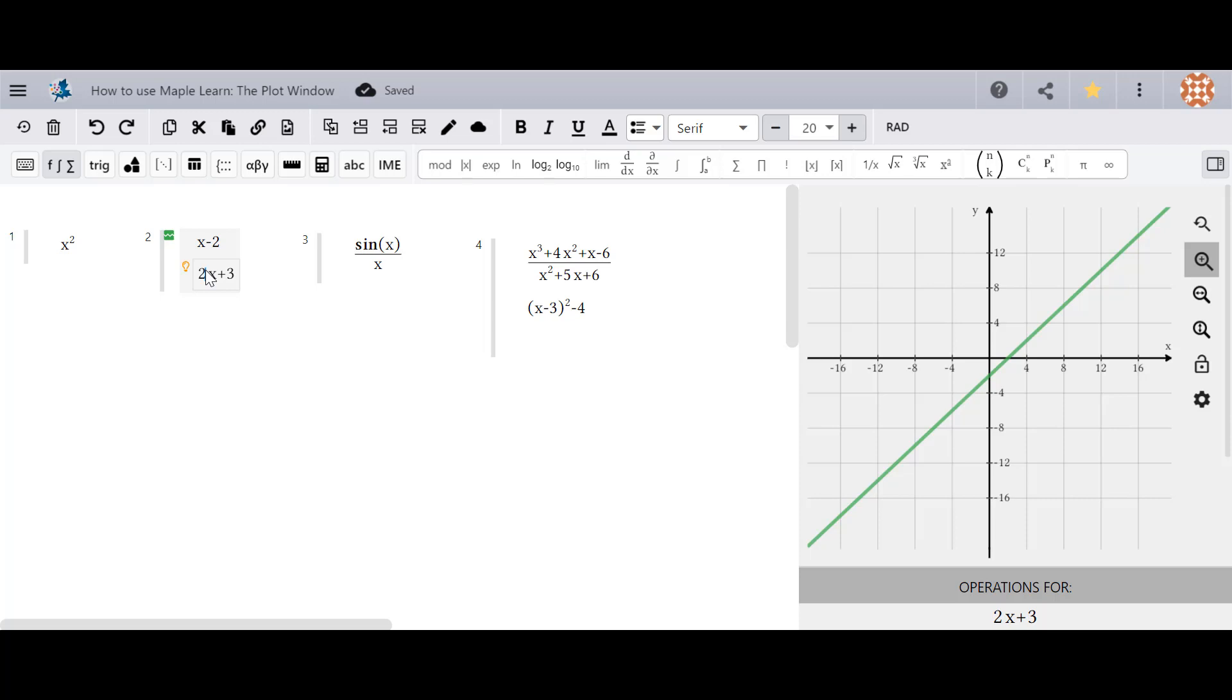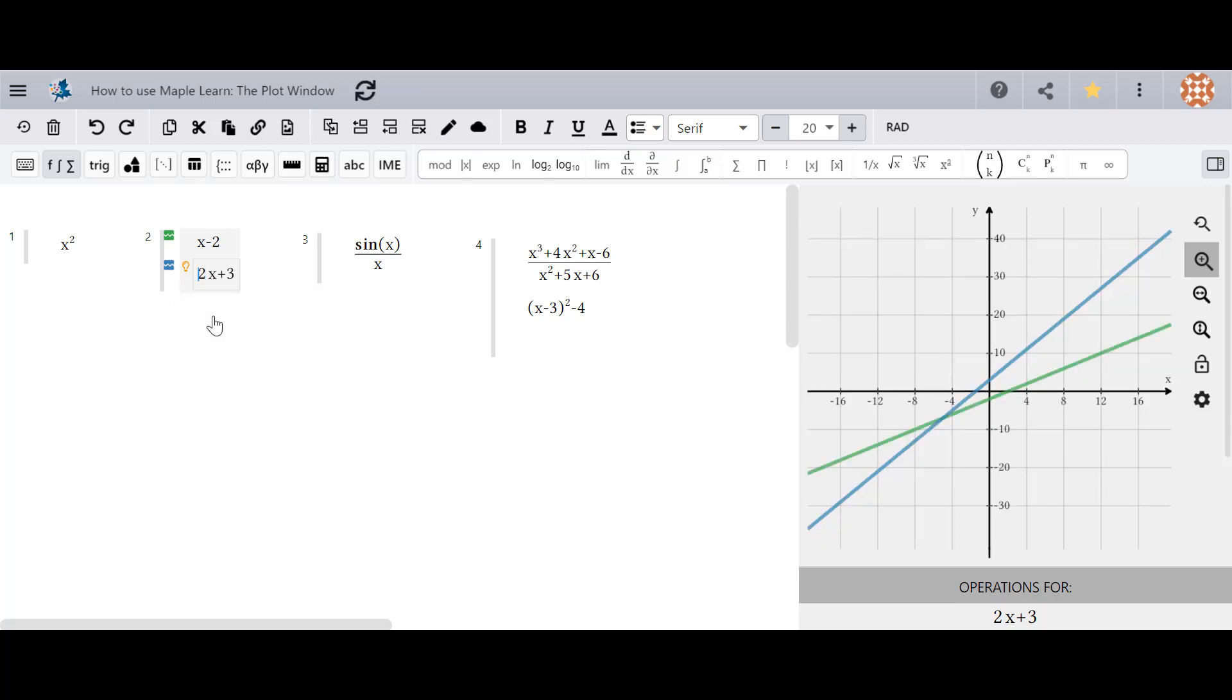You can then choose which functions are displayed in the plot window by using the light bulb and clicking on exclude or include from plot.